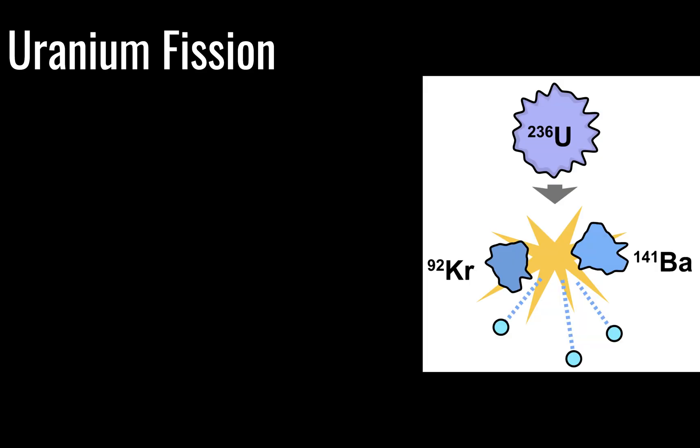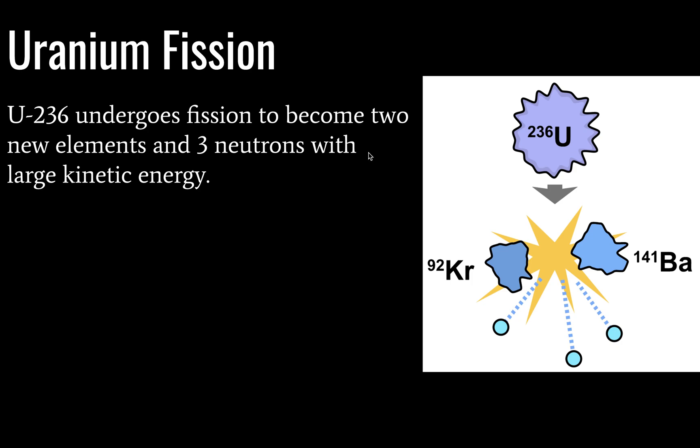Our new products in this case are krypton and barium, our new elements. And we've also now released three new neutrons. And these neutrons have a load of kinetic energy. In addition to the matter that's released, as you can see here, there's a bunch of energy released as well.